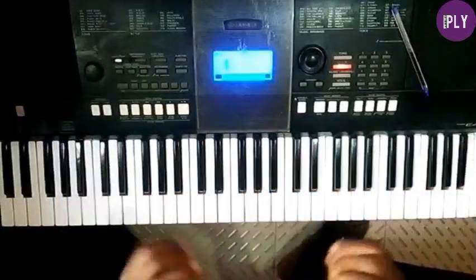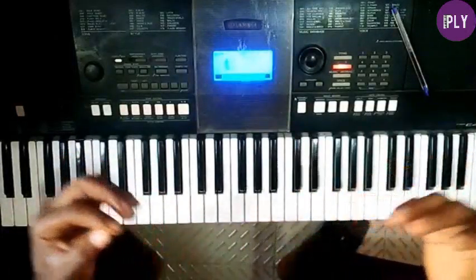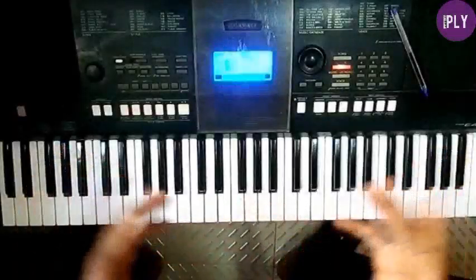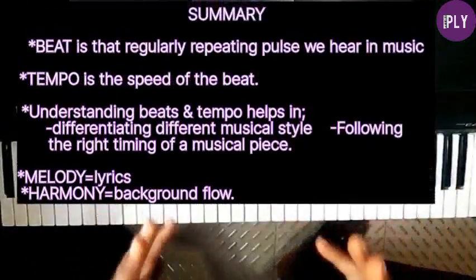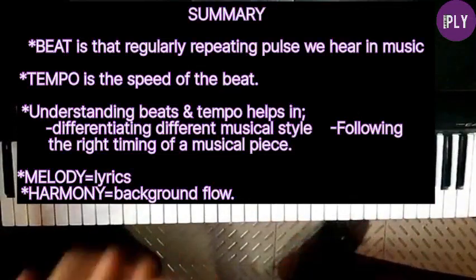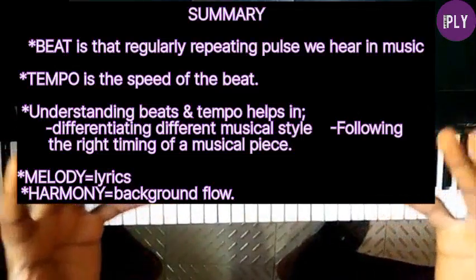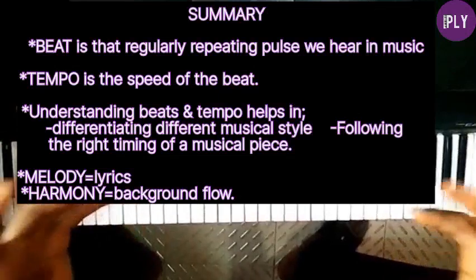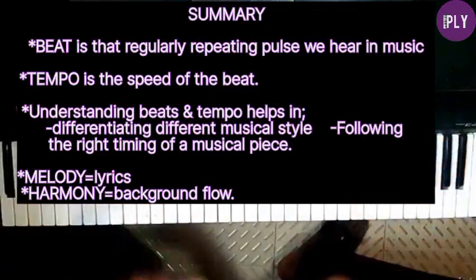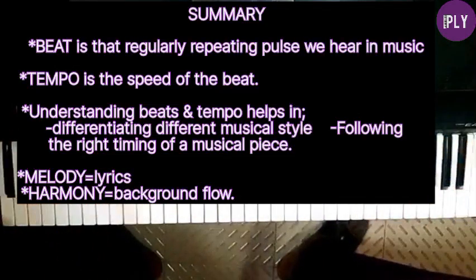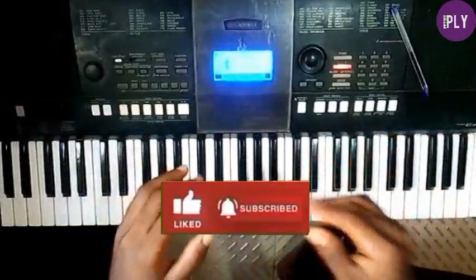These are all the basic music terms you need to start your piano journey. As you progress, you'll understand them more practically and be exposed to many more. Quick recap: beat is the regular repeating pulse in music; tempo is the speed of the beats; understanding beats and tempo helps differentiate musical styles; melody is the lyric of the song; harmony supports the melody. Like and subscribe so you won't miss out. See you in the next video.